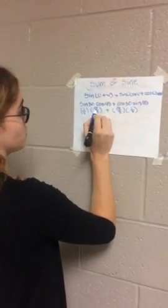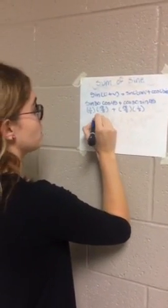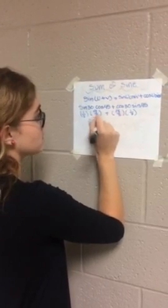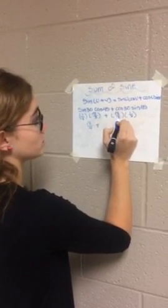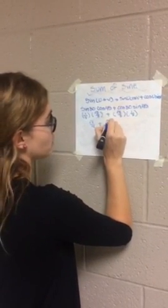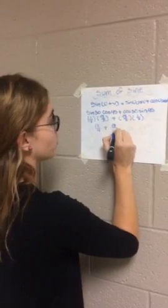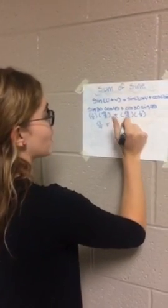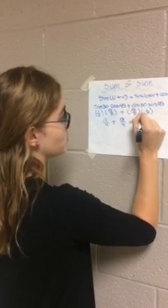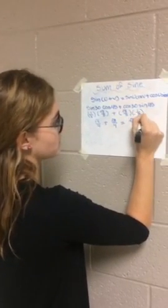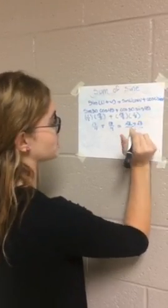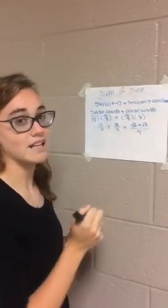1/2 times root 2 over 2 is root 2 over 4, plus root 3 over 2 times 1/2 which is root 3 over 4. Once you add those together, you get root 2 plus root 3 over 4, which is the angle at which our killer was standing.